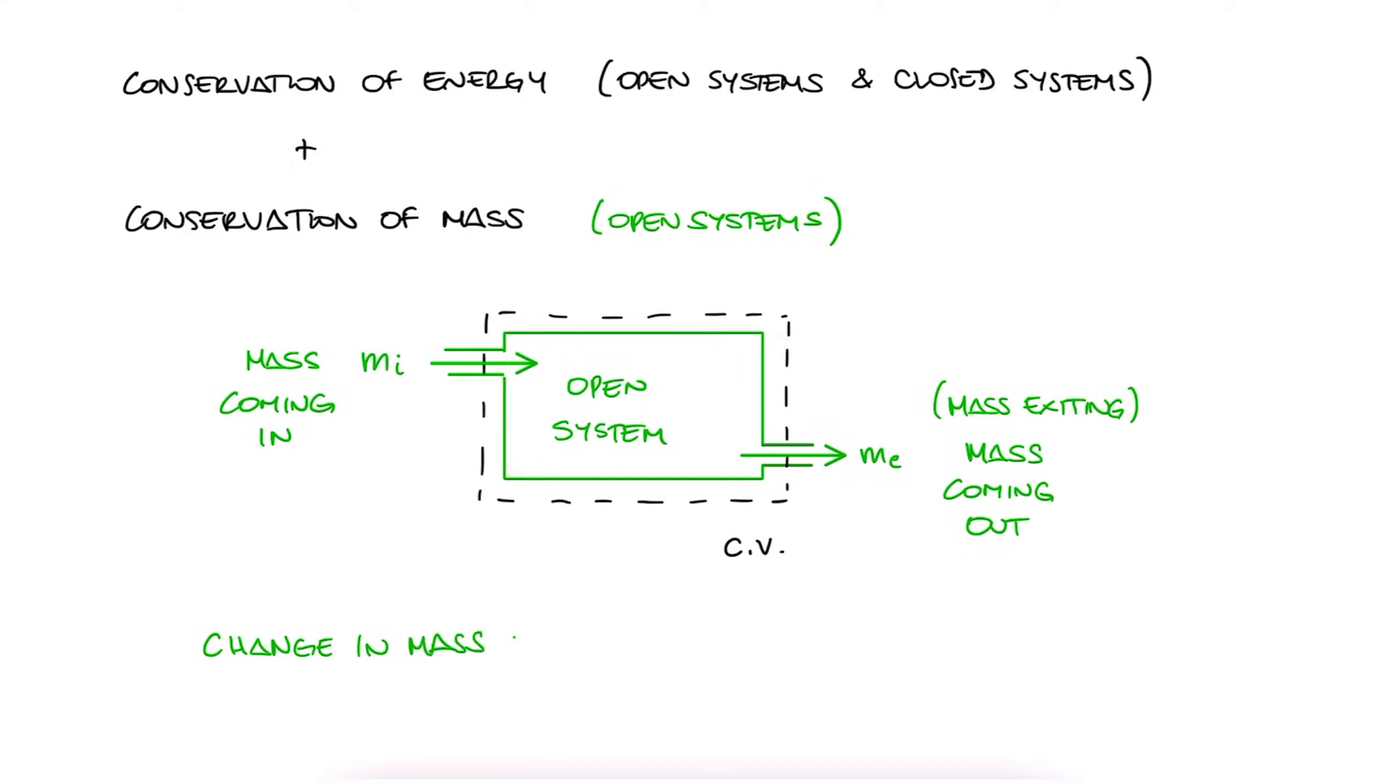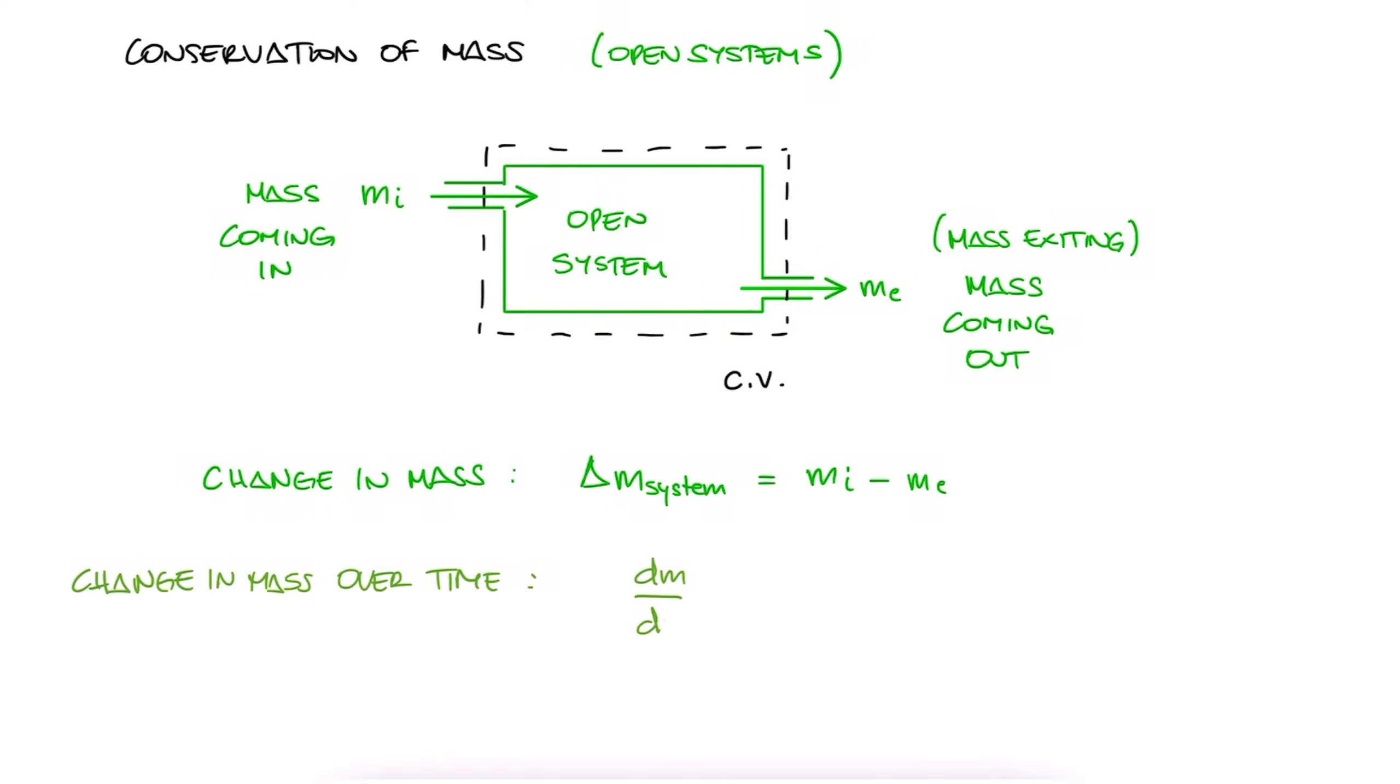The change in mass, delta M subsystem, is therefore equal to Mi minus Me. The change in mass over time, dM/dt, is equal to the mass flow rate entering, Mi dot, minus the mass flow rate leaving, Me dot.